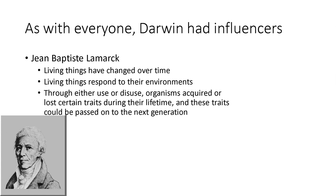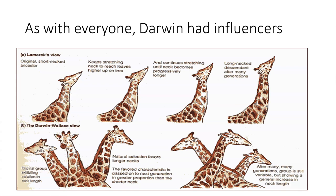Jean-Baptiste Lamarck also influenced Darwin. He was actually the first to think that organisms changed over time, but he argued that whatever an organism acquires in its lifetime is passed on to the next generation. For example, if you got really strong lifting weights, you could pass that strength on to your offspring. His famous example: he argued that giraffes' necks are so long because they kept stretching and stretching, and passed on that acquired characteristic. Darwin and Wallace did not argue that — they argued that variation naturally happens, and whatever genes provide the best chance to survive and reproduce make it to the next generation.